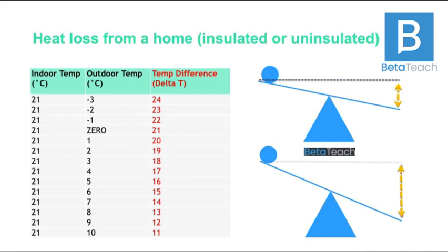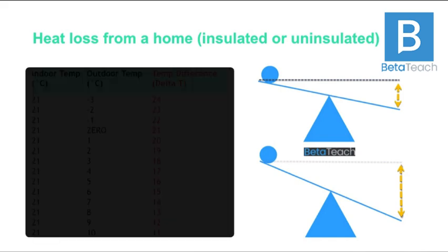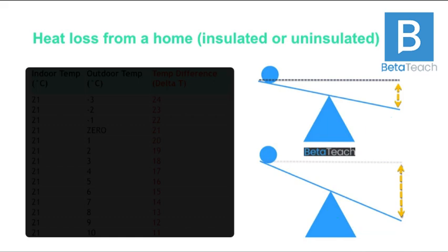Don't worry about the numbers to start with. I use a seesaw analogy — we all instinctively know which way a ball is going to roll. We know it rolls from the high end to the low end, and that's exactly what heat does: it moves from hot temperatures to cold temperatures. So if your home is at 21 inside, heat is going to move outside if it's colder there. If it's a hot summer's day and it's hot outside, the heat is moving in.